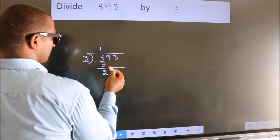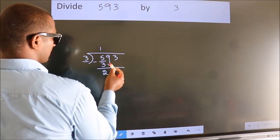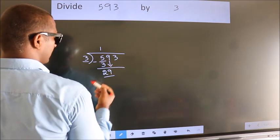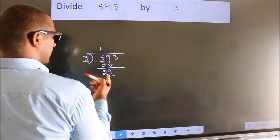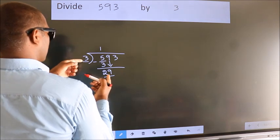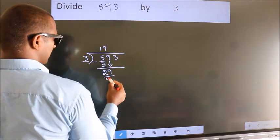After this, bring down the beside number. So, 9 down. So, 29. A number close to 29 in the 3 table is 3 times 9 equals 27.